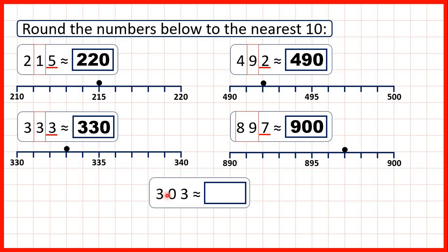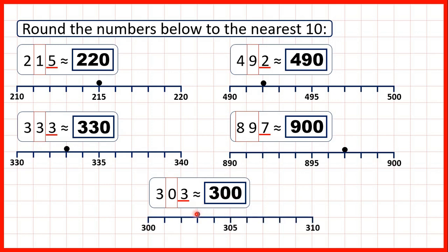Finally, we have 303. To round to the nearest 10, we find our tens digit and underline the place value to the right. If it's 4 or less — like here with a 3 in the ones — we round down. That means the digit we've circled stays the same, digits to the left always stay the same, and digits to the right turn into zeros, so we get 300. 303 is closer to 300 than it is to 310, so that's why we round down.